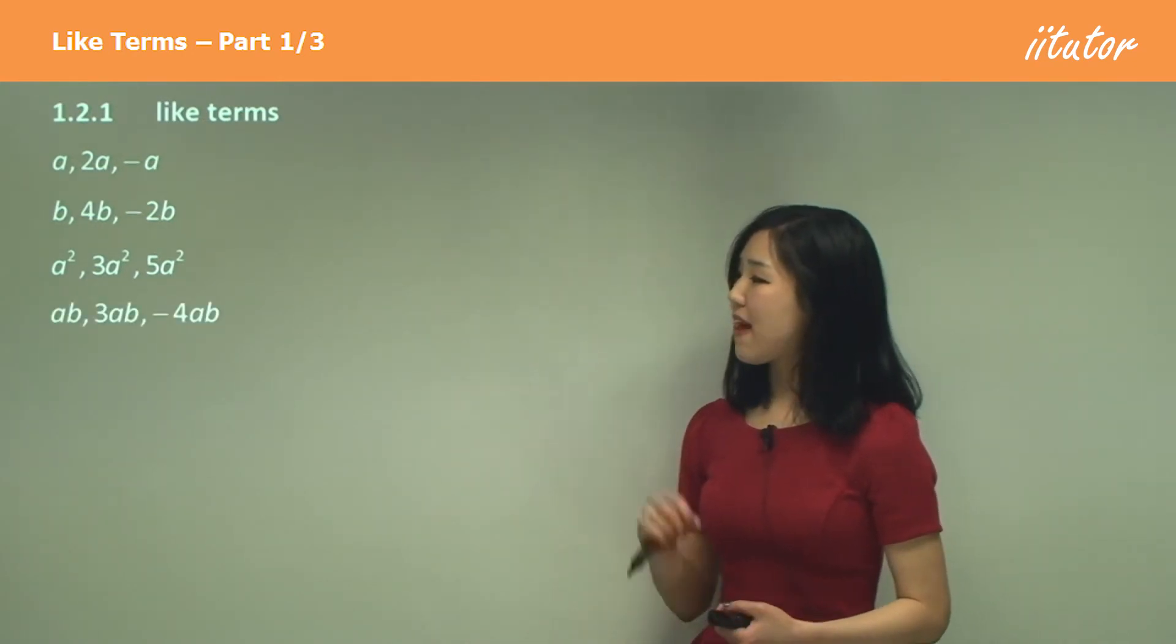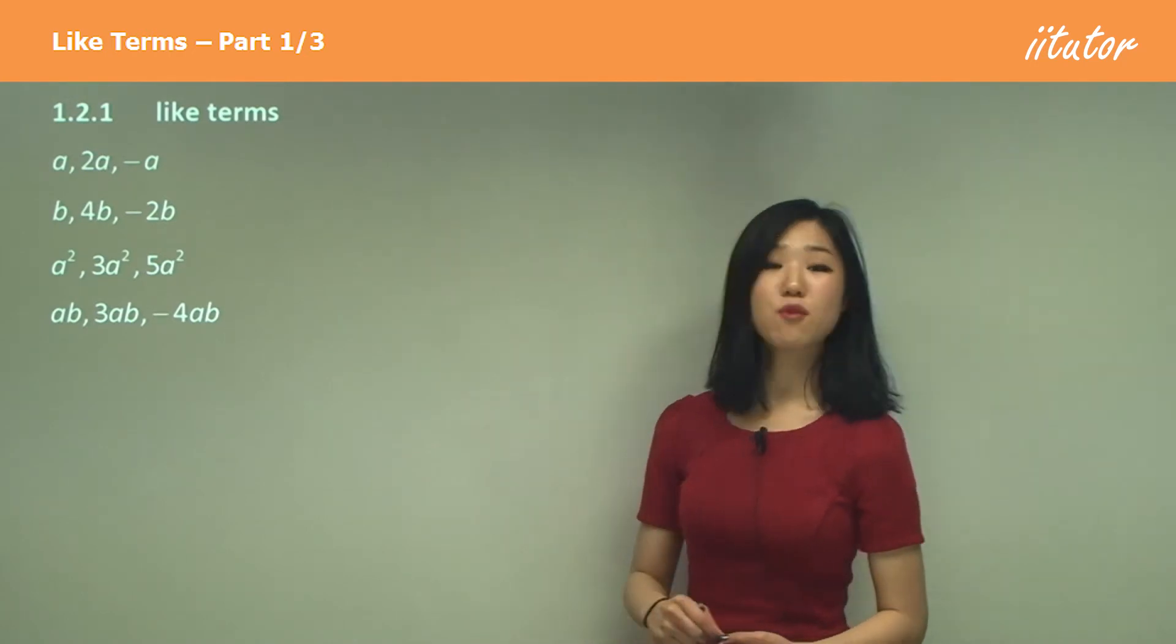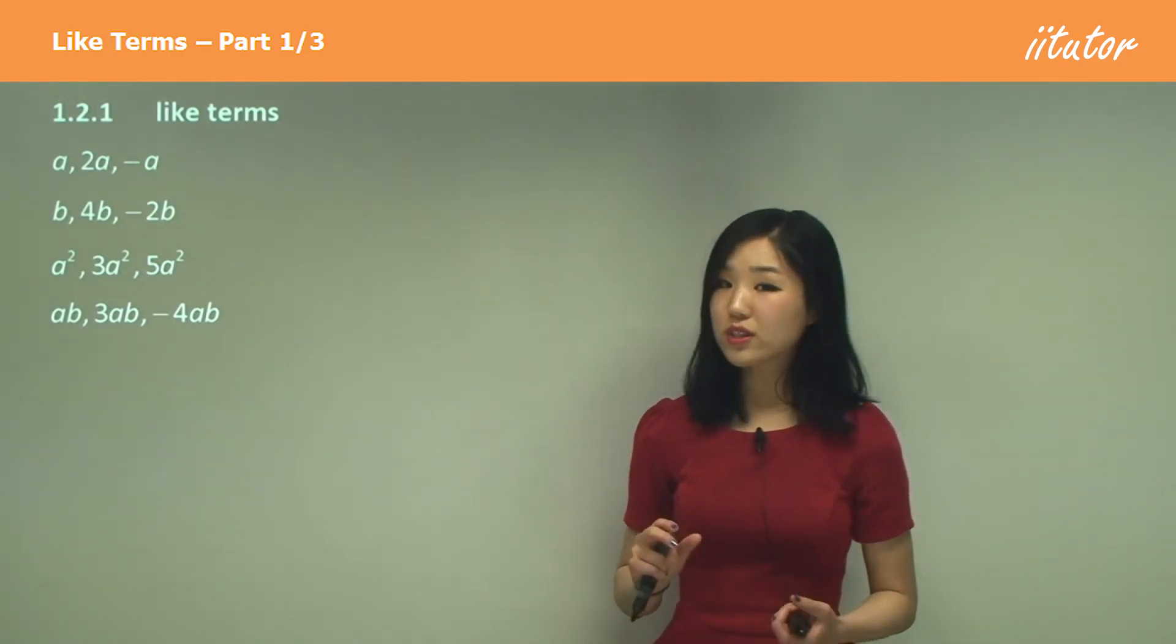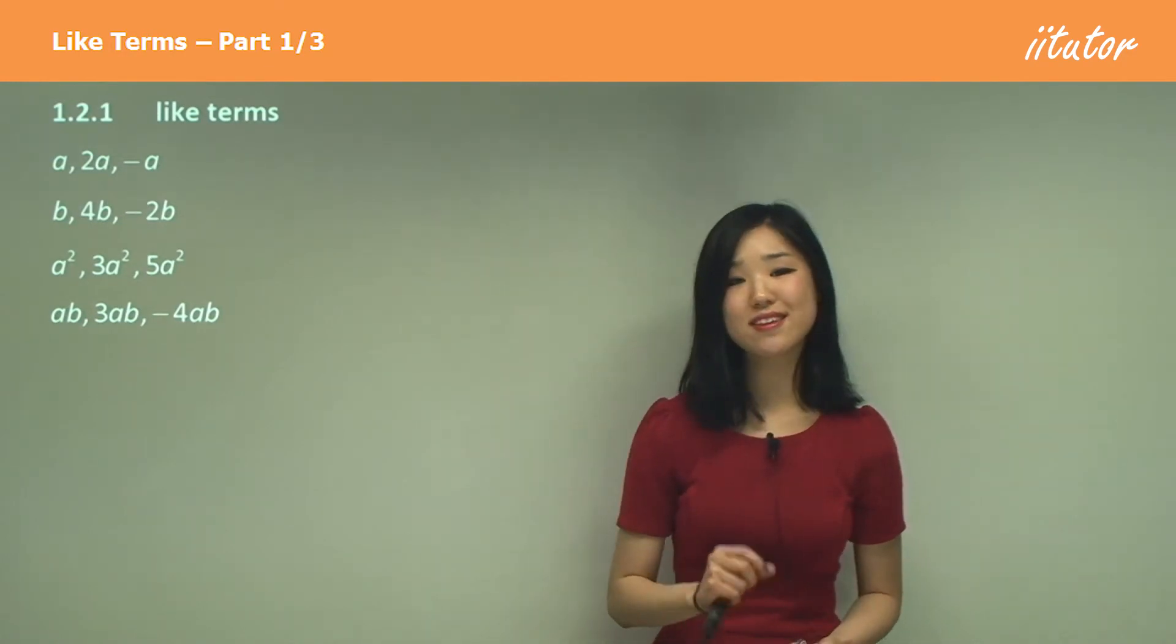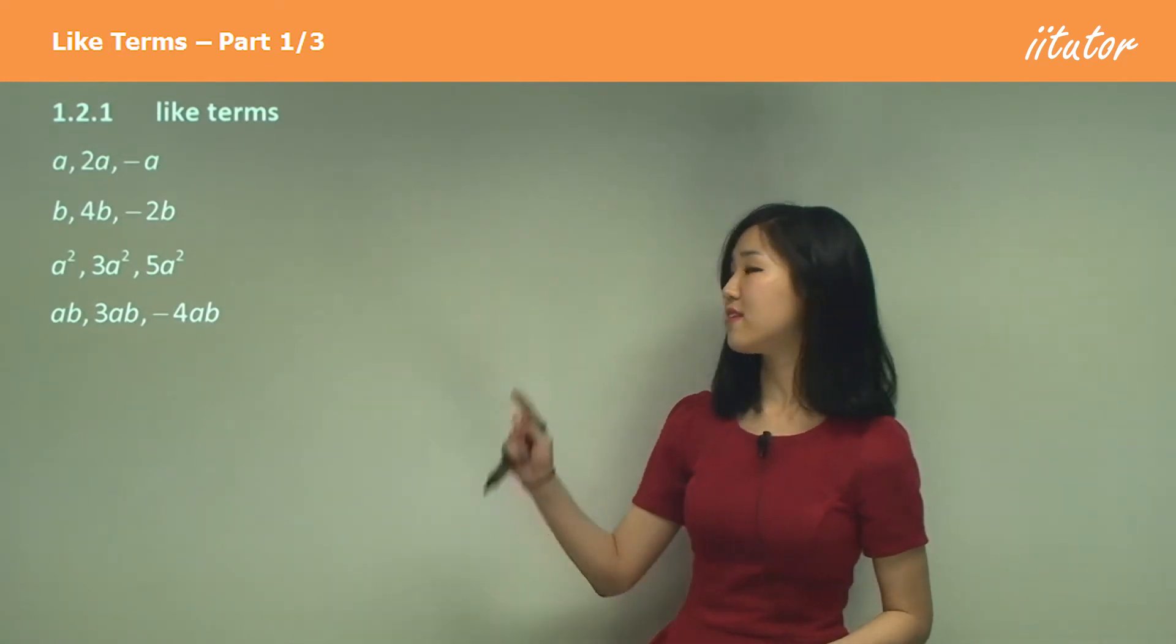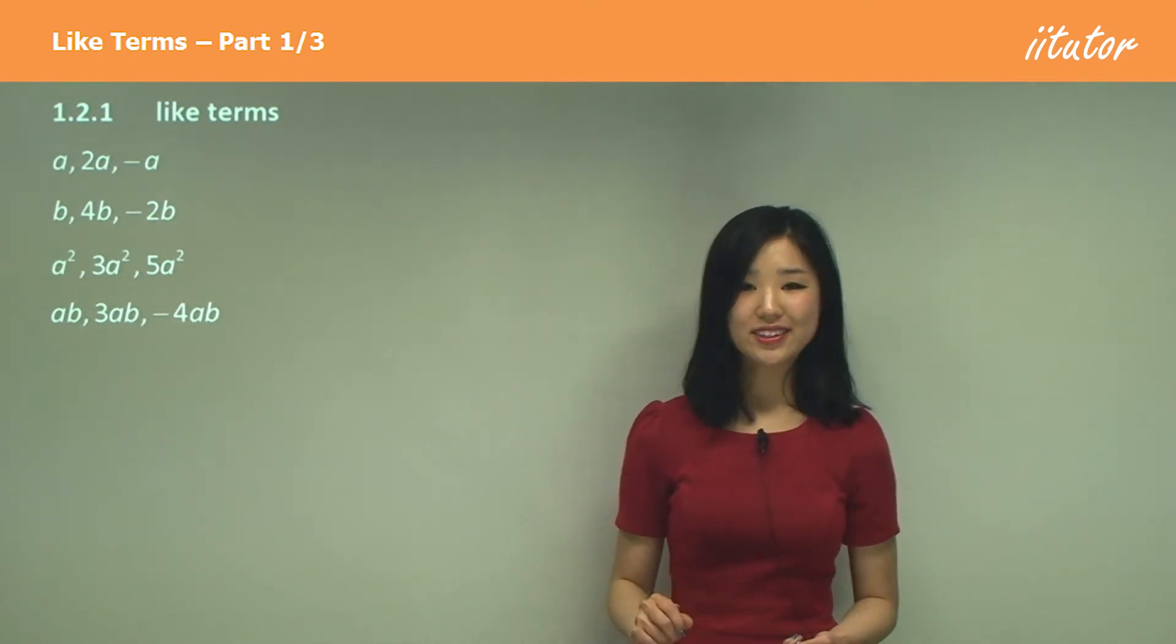Now this time we have ab, 3ab, negative 4ab, now these are also like terms because they end in ab, all of them end in ab, so they're common. ab is common, so therefore that's why they're called like terms.